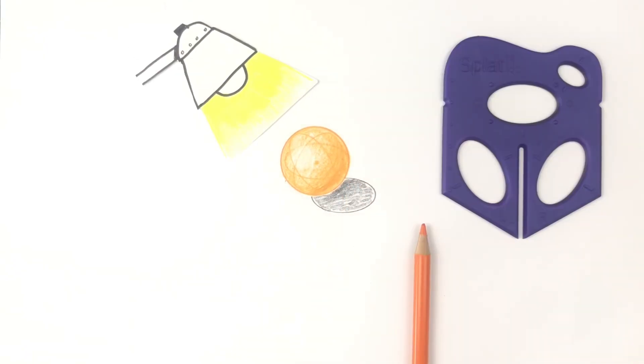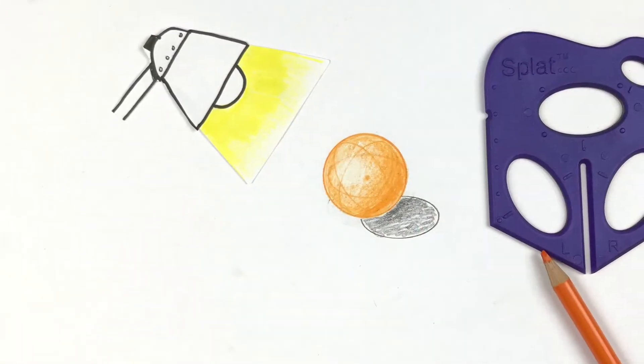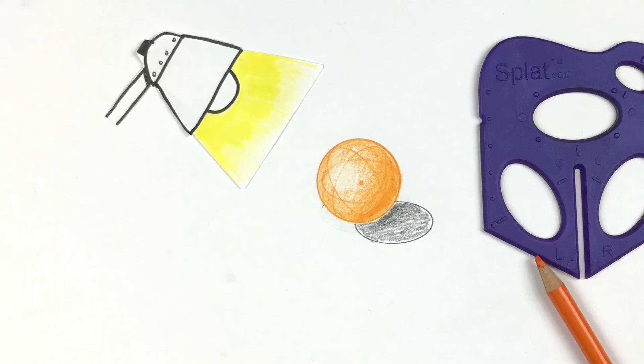If I wanted to cut or section this orange, I can see on those three ellipses, three different planes that I could use to cut it.